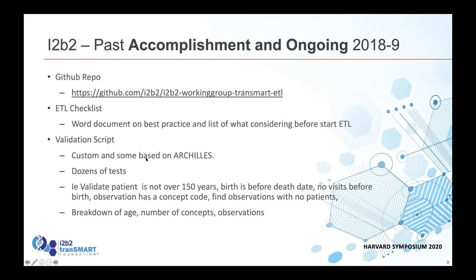After we did this documentation, we started working on some validation steps. We kind of used Achilles as our baseline. We developed a bunch of tests using Achilles, and then some validation — for example, validating people over 150 years old, people who weren't born before they died, visits on their birth dates, things of that nature. Then we worked on some breakdowns and number of concepts — validating that numbers should be increasing, like number of patients increasing every month. And if you had a drop in some section—